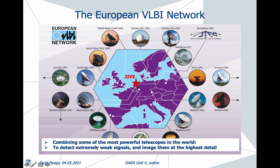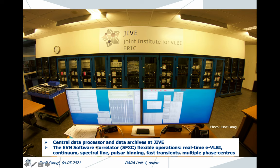The EVN is one of the most sensitive VLBI networks in the world. We do observations at three sessions a year, where we record the data on disks and then ship those data to the central data processor at JIVE in the Netherlands, where the data will be combined. We also have real-time e-VLBI sessions when the data are immediately transferred through optical fibers to the correlator at JIVE and correlated in real time. This is the correlator itself at JIVE, the central data processor.